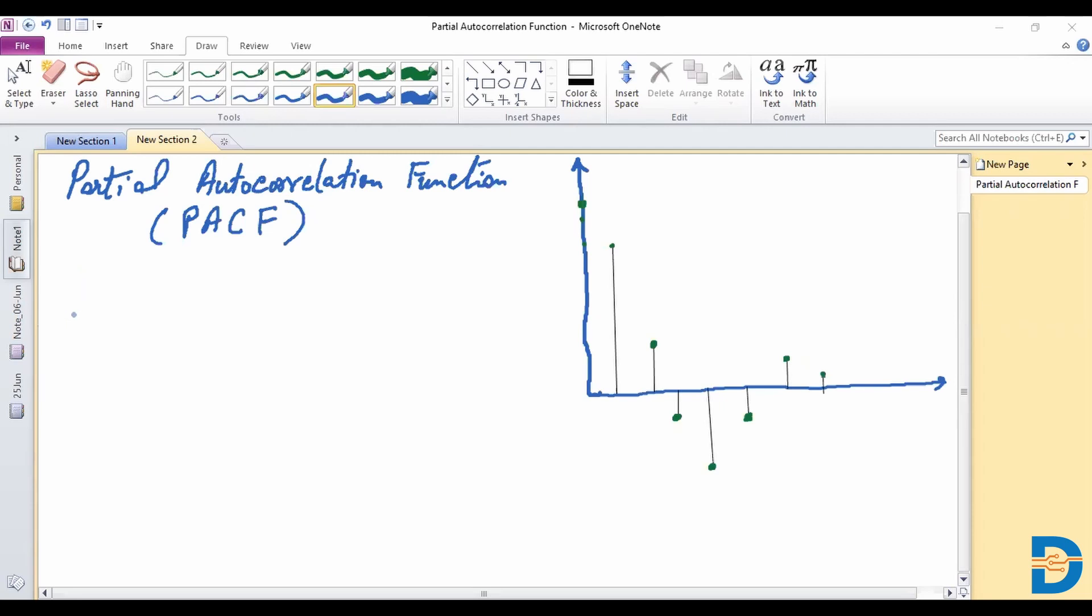We saw how an observation at time t would be correlated to all the previous observations which we called lags, where given a fixed period or interval of time we said t-1, t-2, t-3.